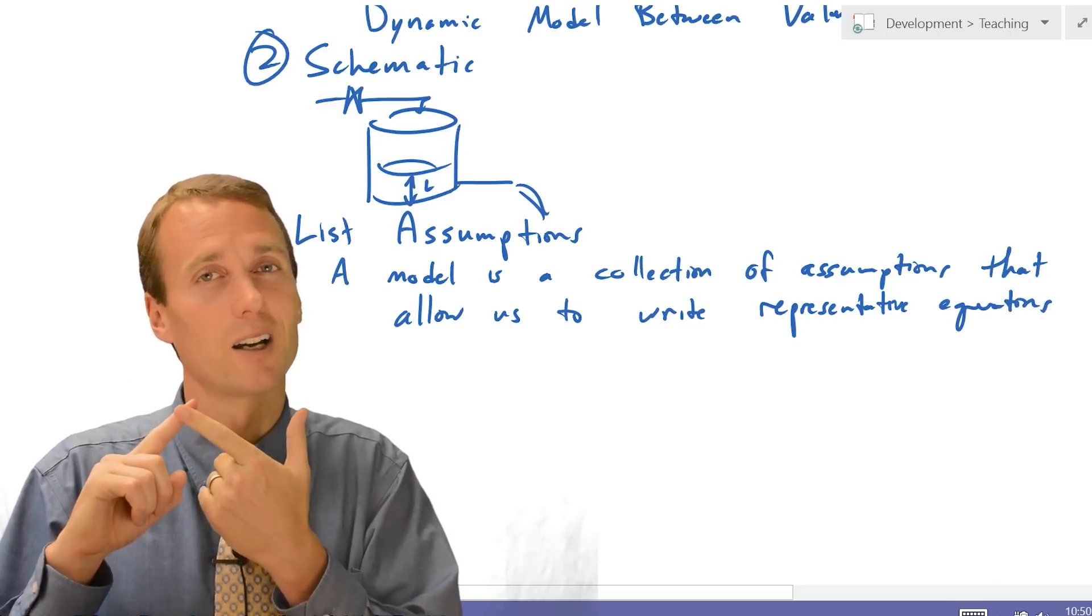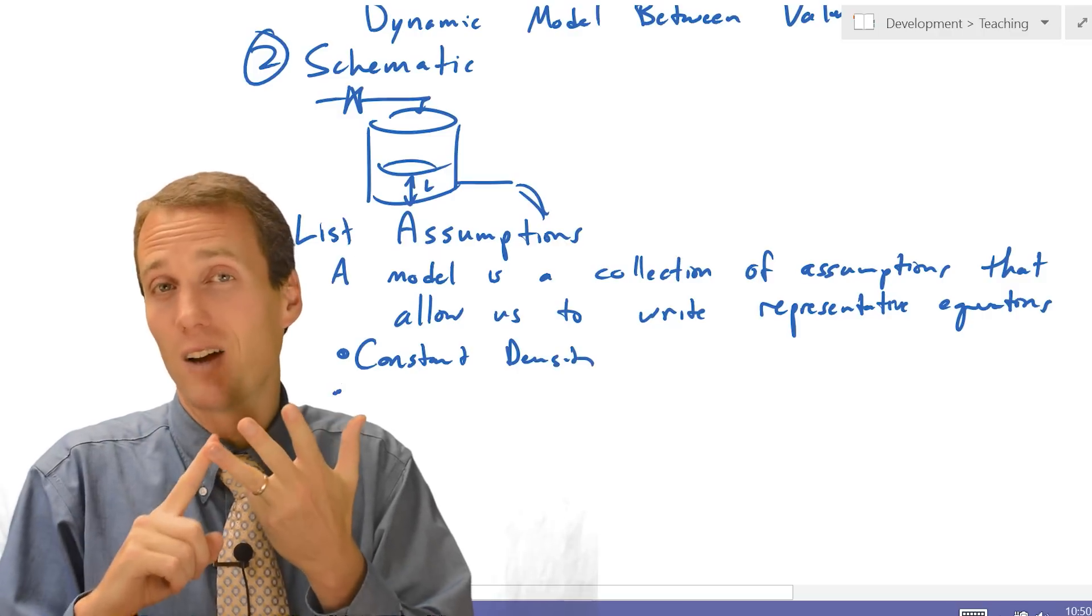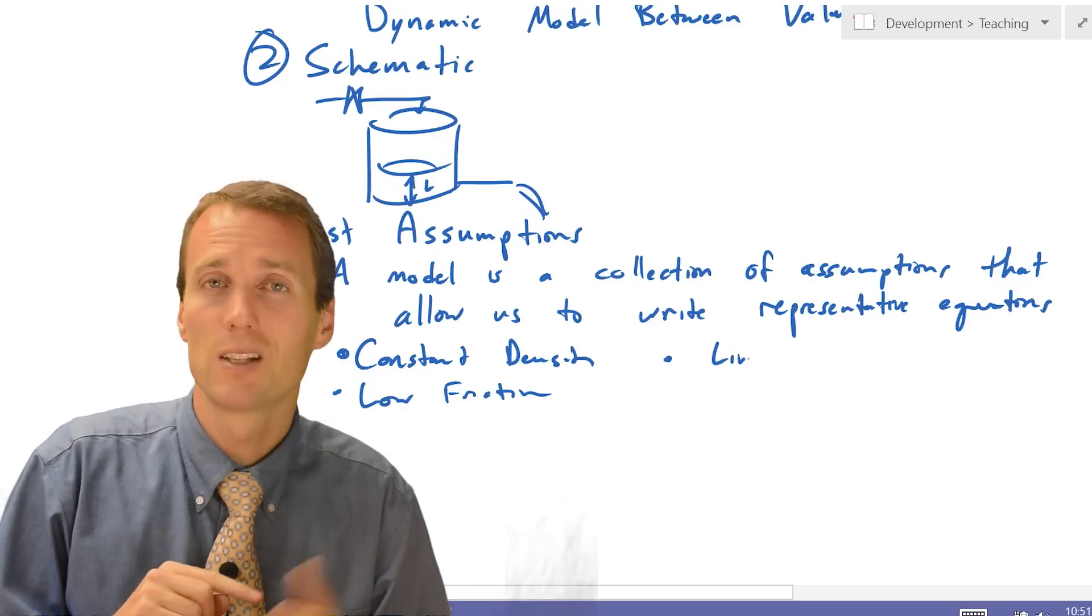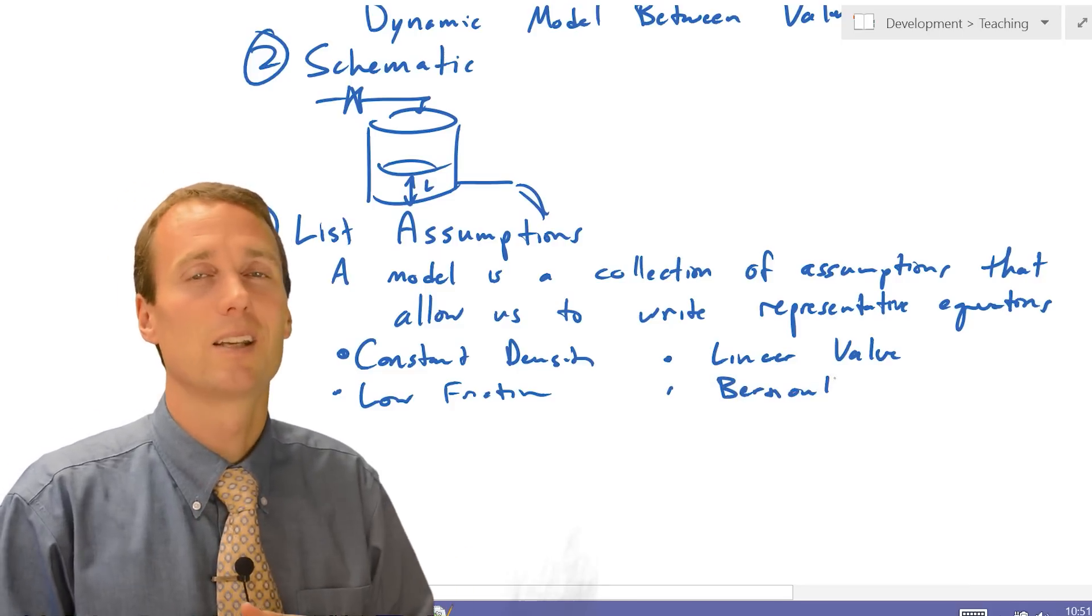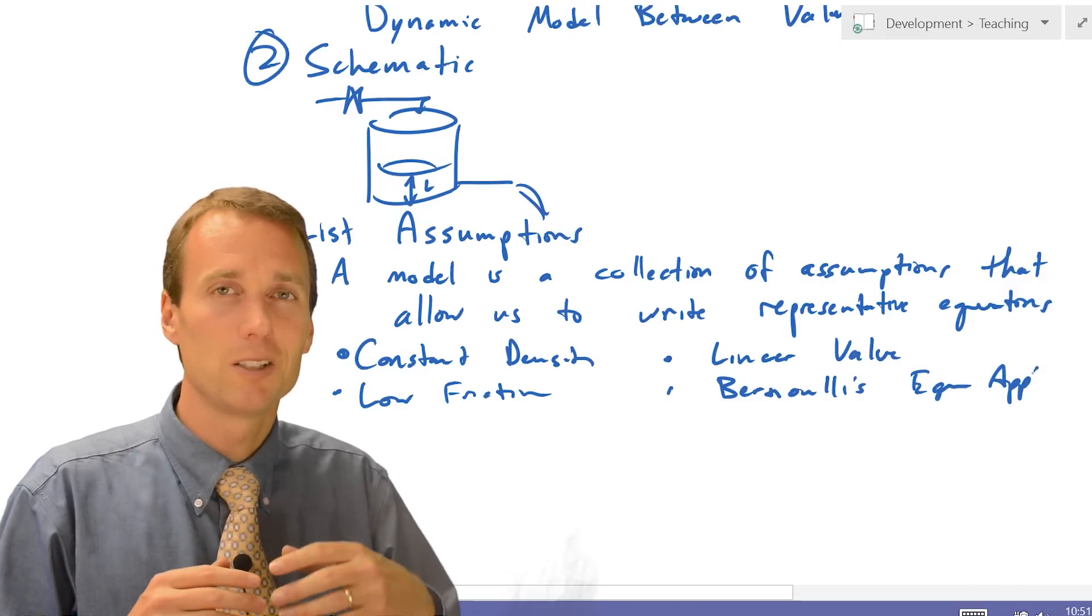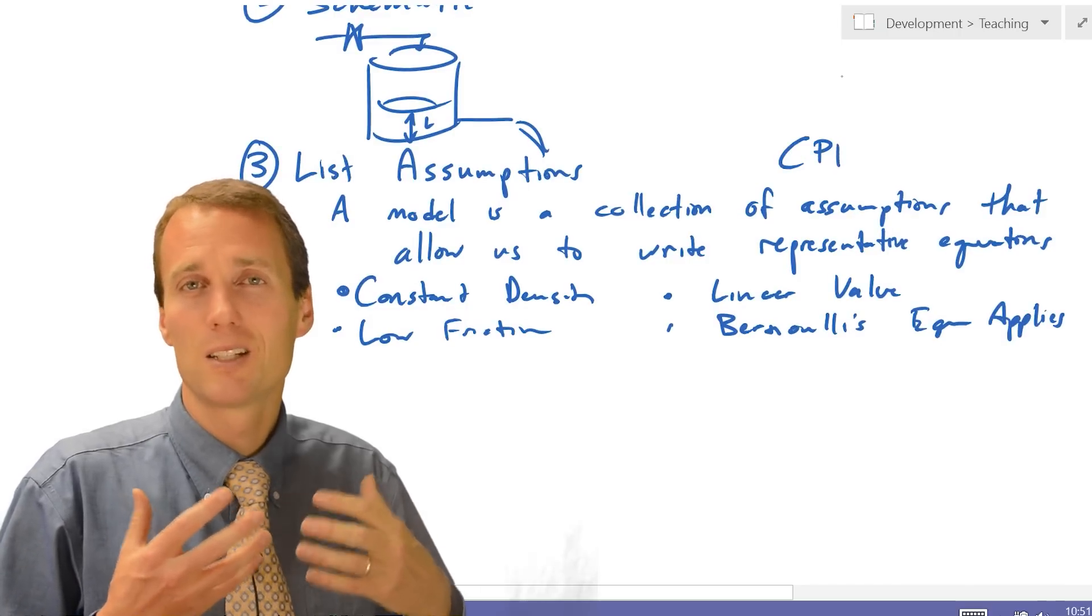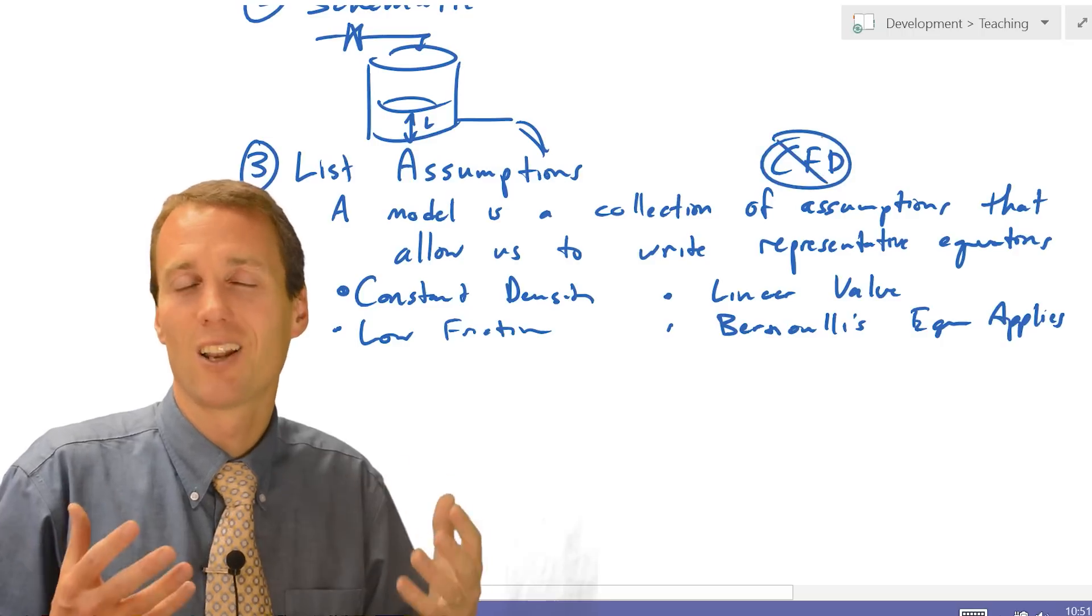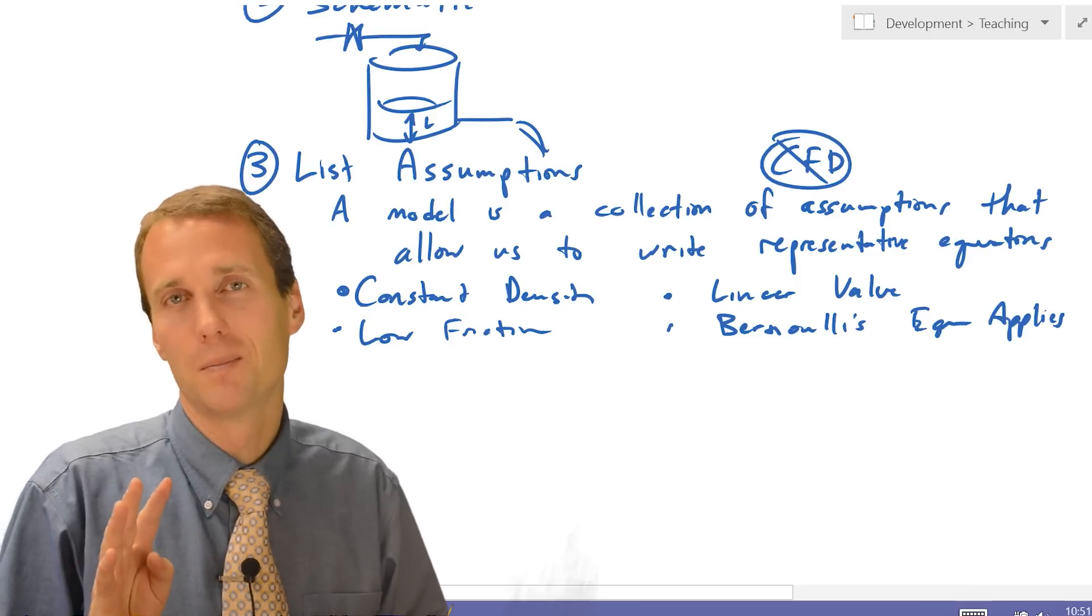constant density, low frictional losses. There might be others like linear valve. You could say also that maybe Bernoulli's equation applies in this case. So there's a couple other assumptions that we'll need to make, but we want to make sure we list these and make sure that we know what assumptions are going into this model. We could do a very sophisticated model, like computational fluid dynamics, but really we want to have something that's simple enough to be able to control the process, not too sophisticated that we get kind of lost in the details.